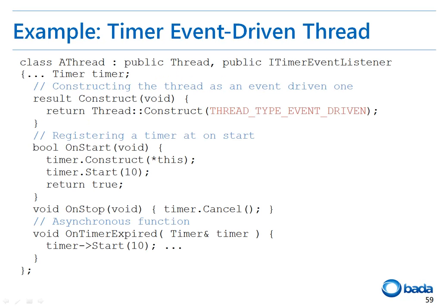This event-driven thread sample code creates a thread that performs an operation periodically by using the timer event. First, the class corresponding to the thread inherits the thread class and the iTimerEventListener class because the class should use the timer event.